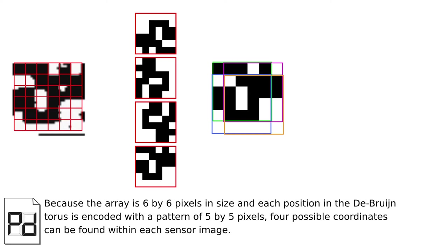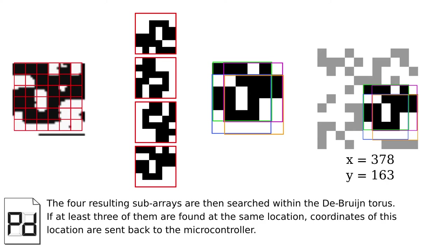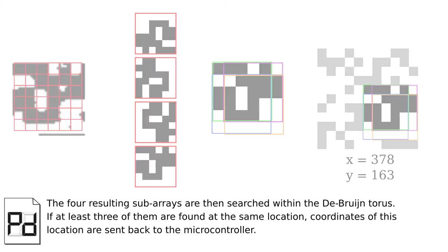four possible coordinates can be found within each sensor's image. The 4 resulting sub-arrays are then searched within the De Bruijn torus. If at least 3 of them are found at the same location, coordinates of this location are sent back to the microcontroller.